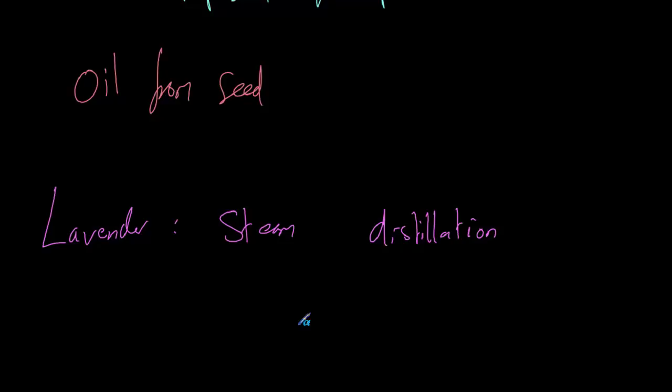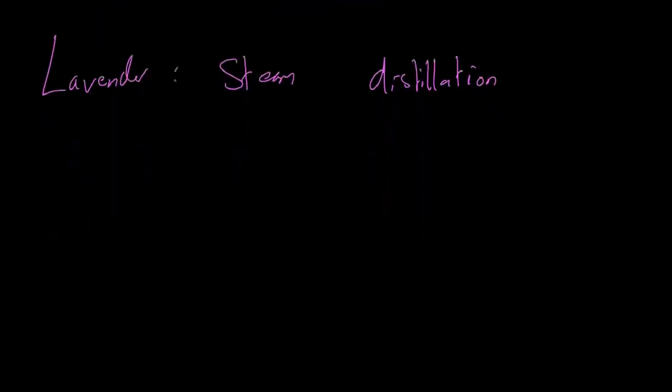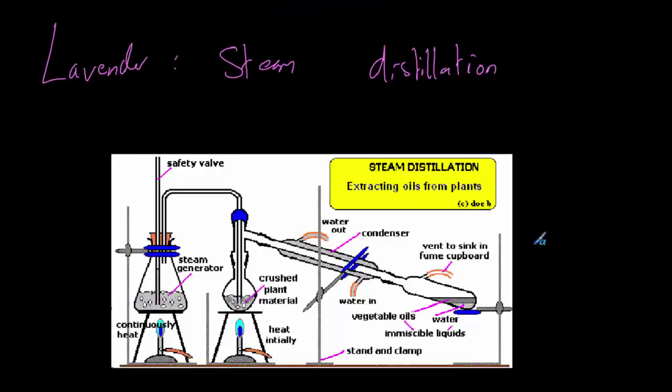What happens here is slightly different to normal distillation because we are using steam and we'll separate the oil from the water at the end. So what happens is we take a lavender plant and we crush the lavender plant and we put it into boiling water. Let's get a diagram of that to show you.